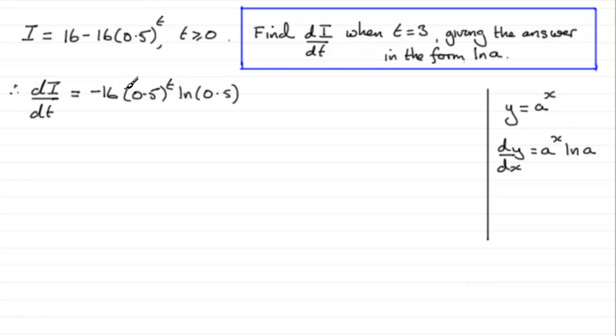Now we want to clean this up, but don't make the mistake of saying this is 16 times 0.5, which is 8, and then saying 8 to the power t. It's not. These are two separate identities, basically.